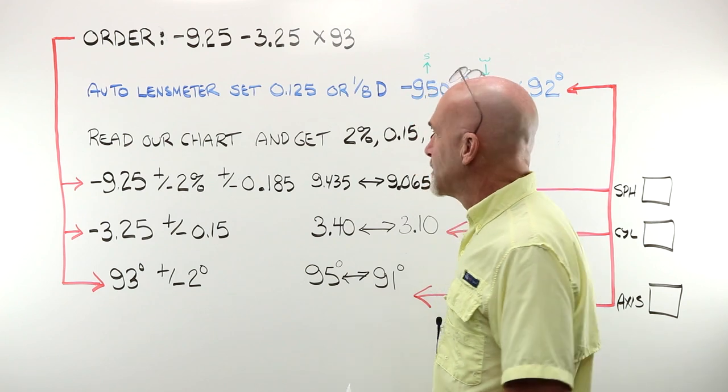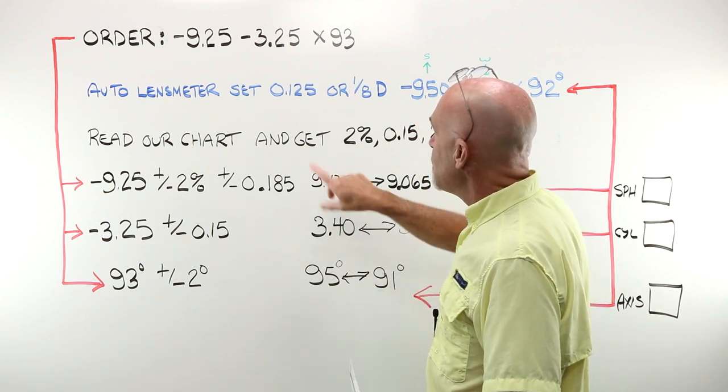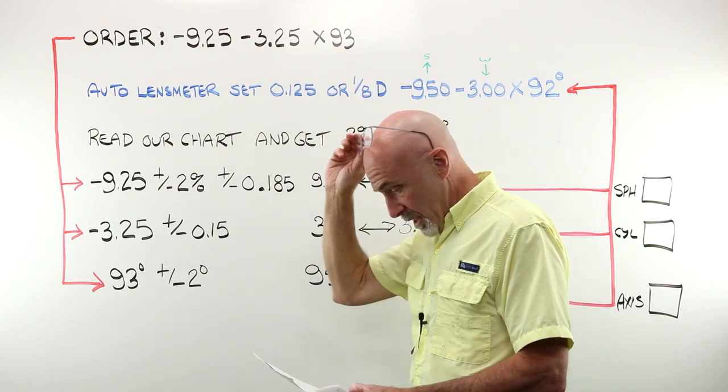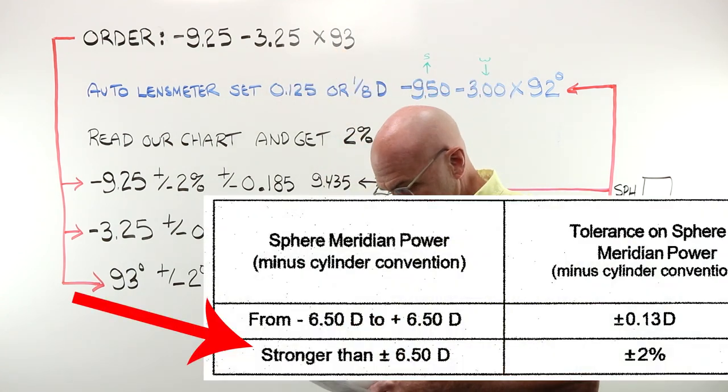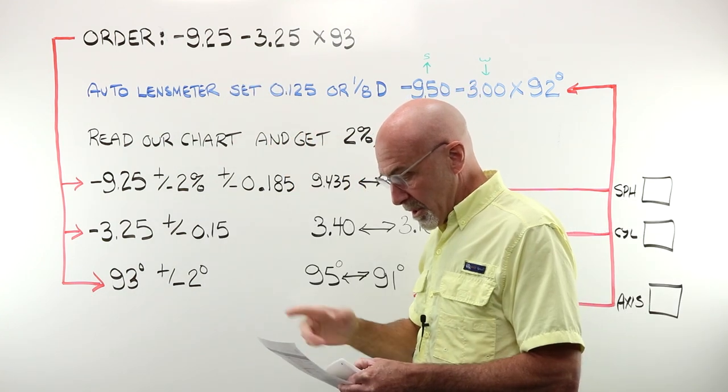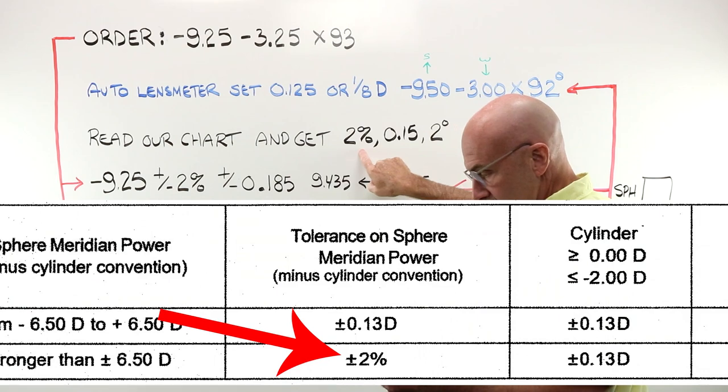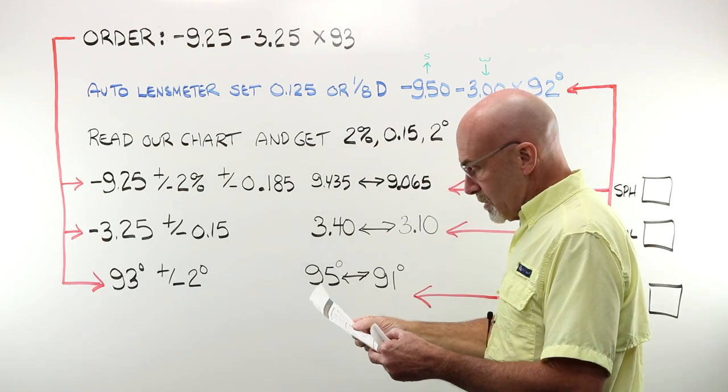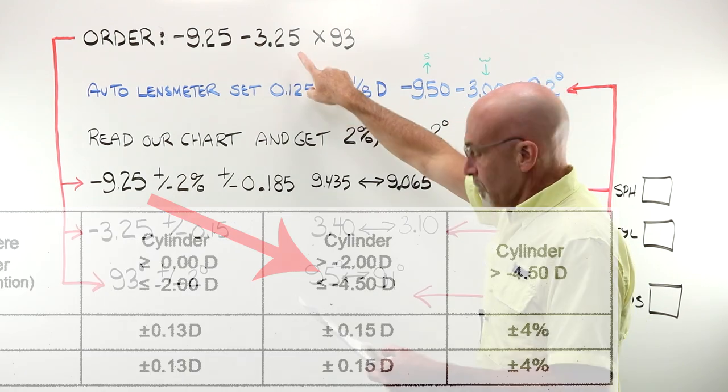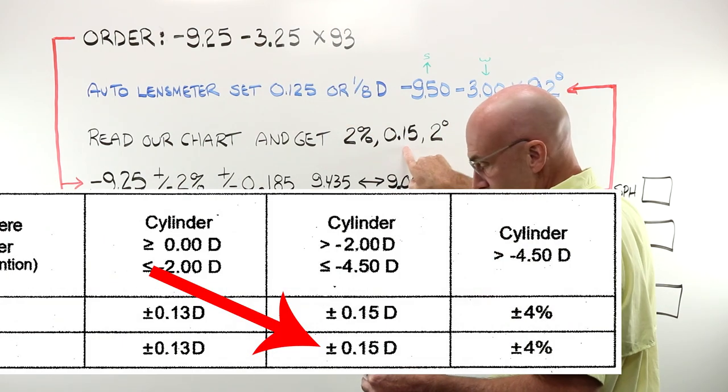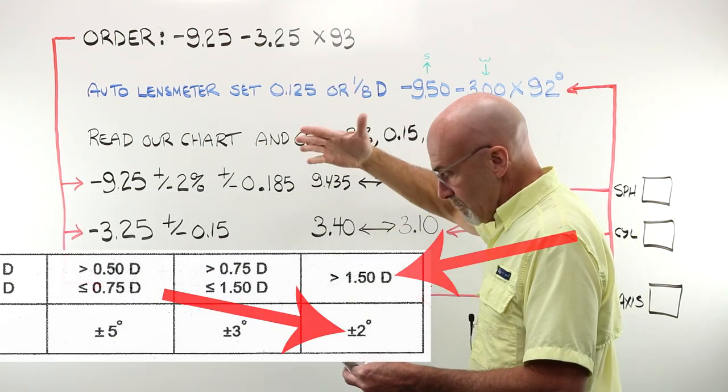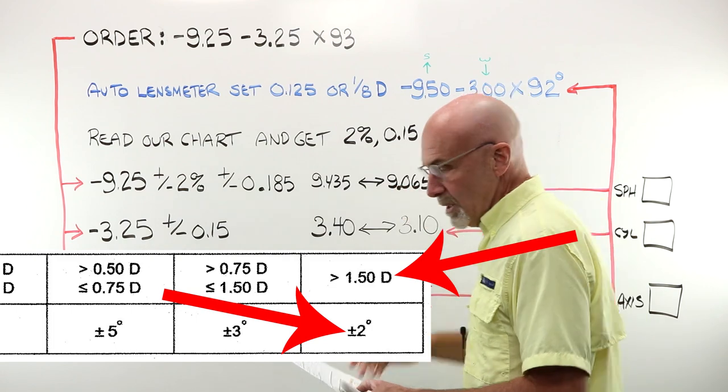Let's figure out what tolerance is for 925, 325, and 93. Well, let's see. Sphere meridian power stronger than 650 certainly tells us we have plus or minus two percent. Our cylinder falls between minus two and minus 450, so that gives us 0.15 plus or minus. And obviously our cylinder value is well over 150, so we have two degrees there.